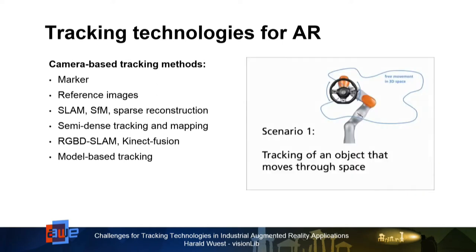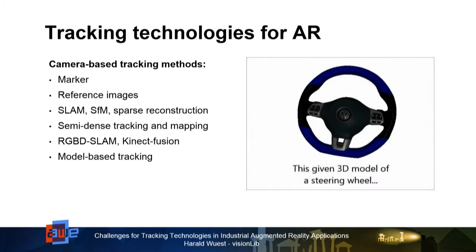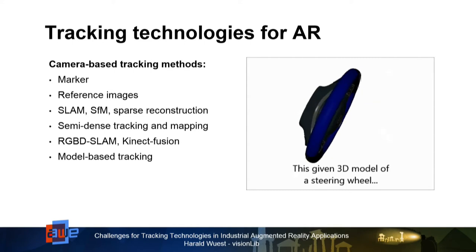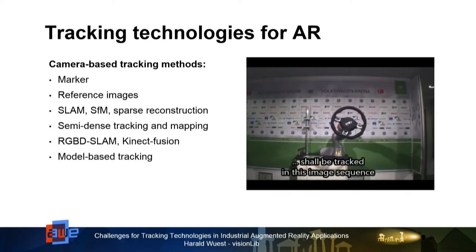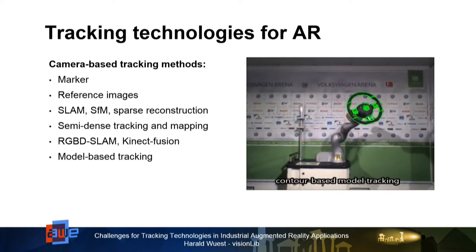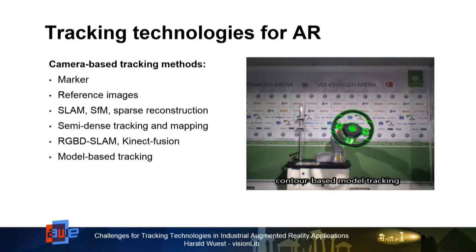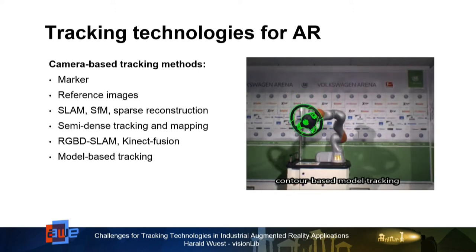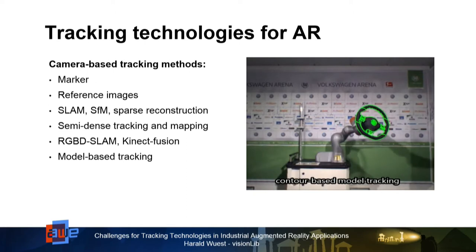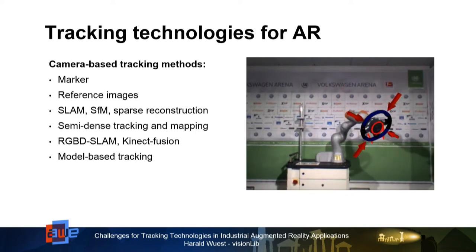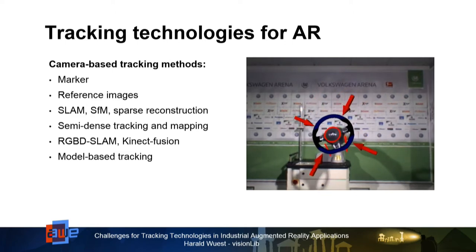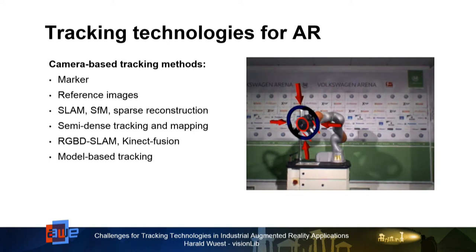Then we did lots of model-based tracking — this was actually the first thing I started when I joined. For many years nobody was really interested in these model-based tracking technologies. But during the last years there was more and more interest, and people realized: if you have the model, you could just use the CAD model as a tracking reference, and things would be so much easier. Here this was a tracking challenge from Volkswagen where we got a CAD model as a reference, and the task was to find this CAD model in the real image. A robot was moving the steering wheel and we got the 3D model of the steering wheel and could apply our tracking algorithm with this data.